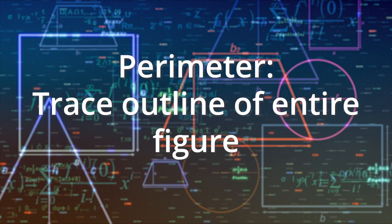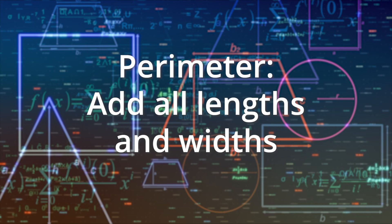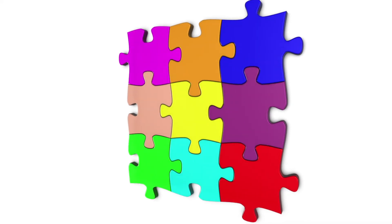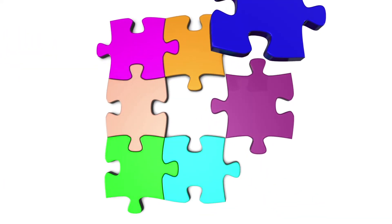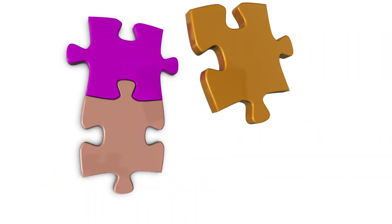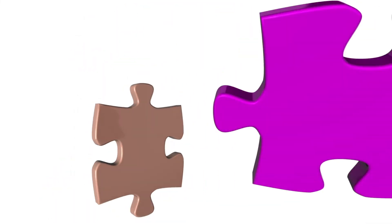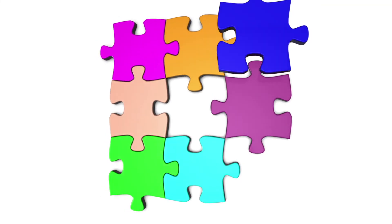To find the perimeter, trace the outline of the entire figure and add up the lengths and widths. If it helps, you can think of the odd shape as a puzzle, which you are taking apart to discover the area, then putting back together again to find the perimeter.